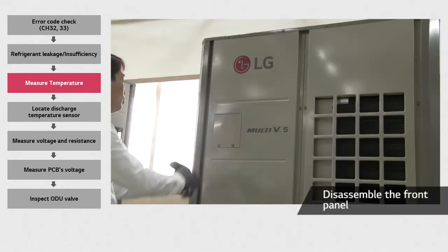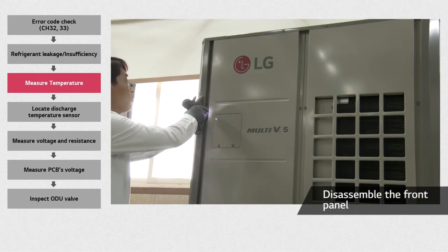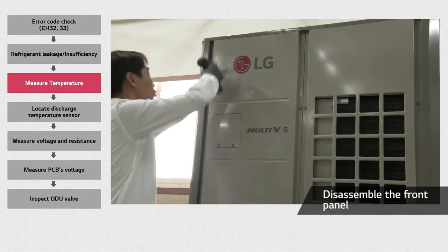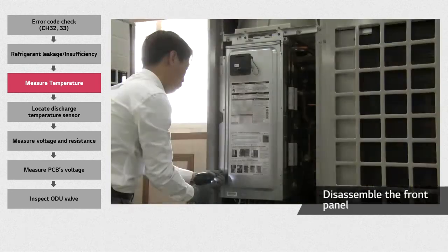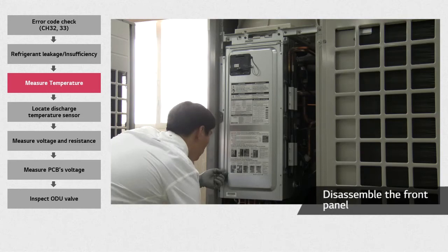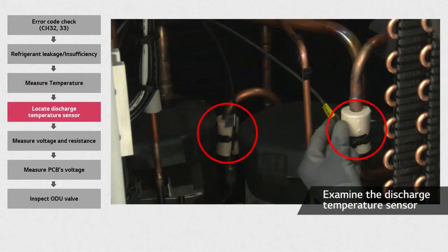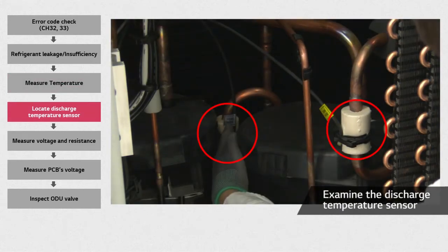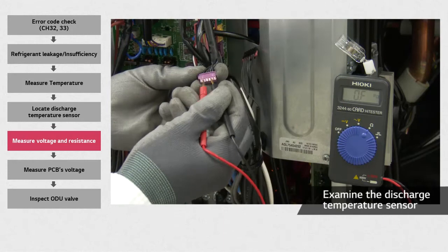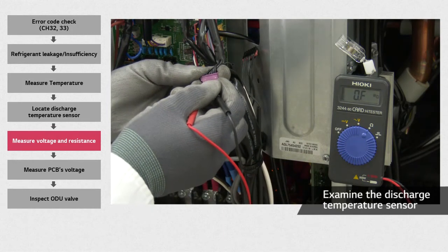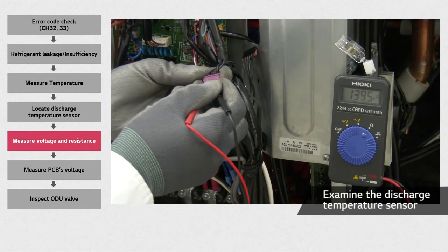If no leakage or damage to the piping is found, you will have to inspect other factors. First, remove the front panel on the outdoor unit and then disassemble the control box. Check that the discharge temperature sensor is in the proper location. Measure the resistance across the two lines of purple and black connectors connected to the external PCB. This error will occur if the value is greater than 5 megaohm or smaller than 2 kiloohm.